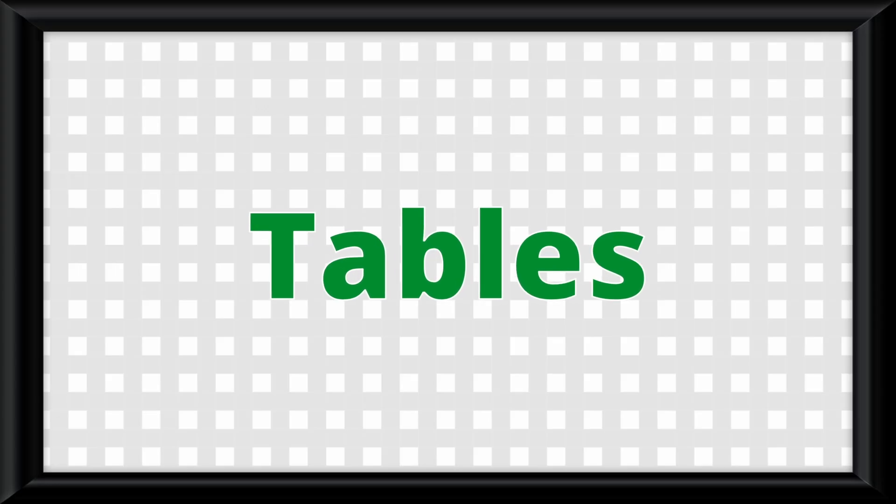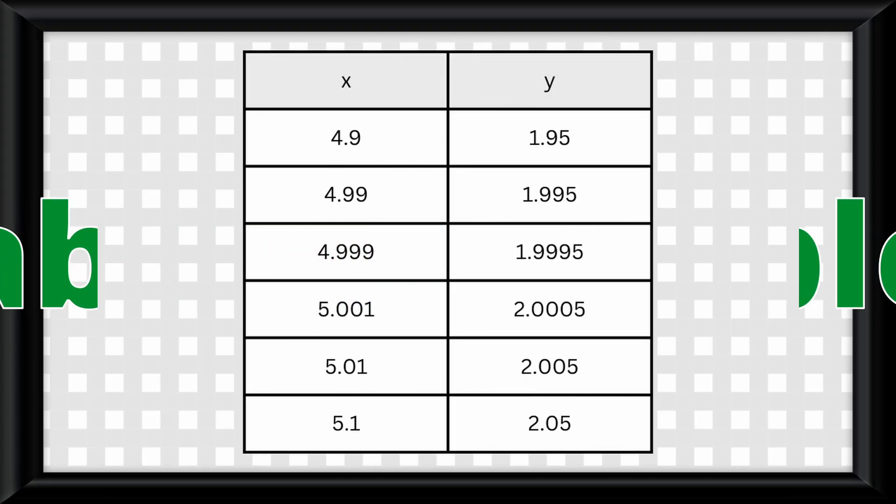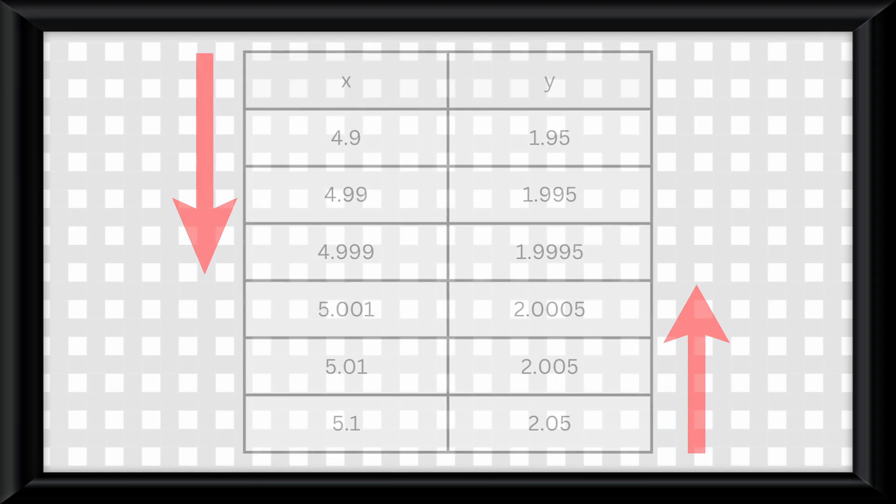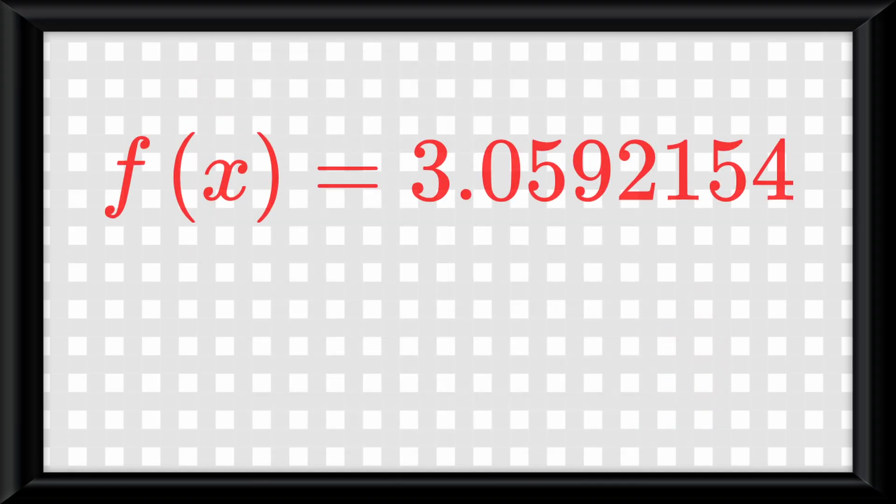Now let's move away from graphs. Time to talk about a good friend of graphs called tables. In this case, limits are actually pretty easy to estimate. For example, in this table, it's pretty obvious that the limit as x approaches 5 of this function will be 2. And that's pretty much all I have for tables, just remember to always round your answer to three decimal places. Alright, now I'd like to move to algebra with limits.